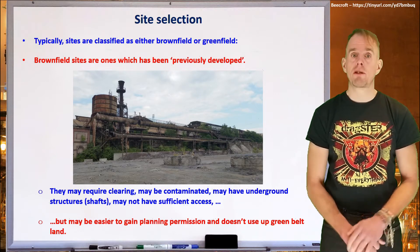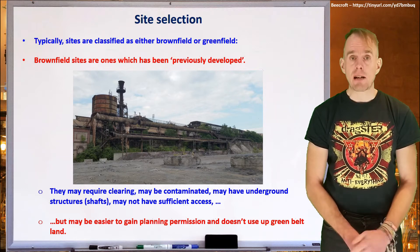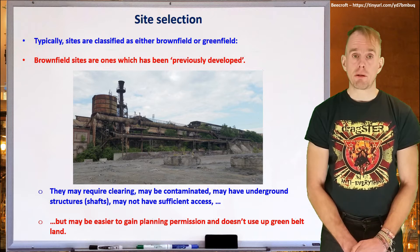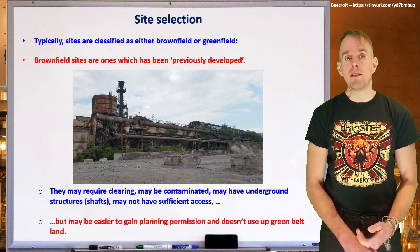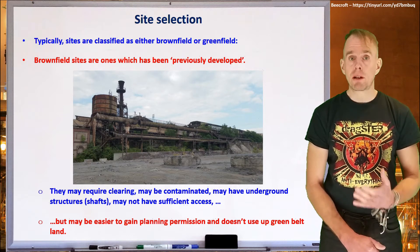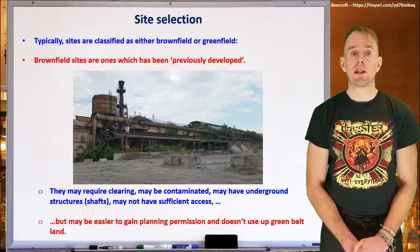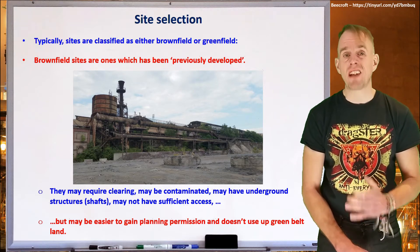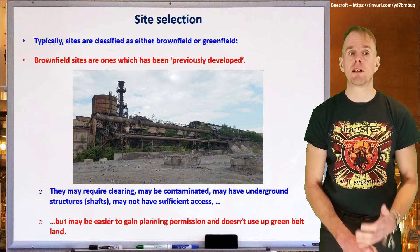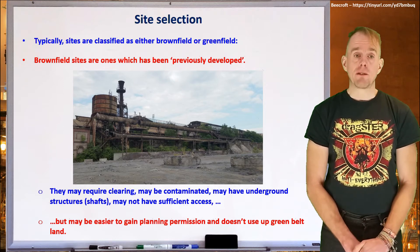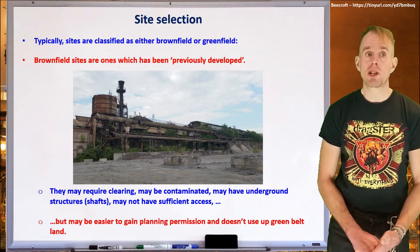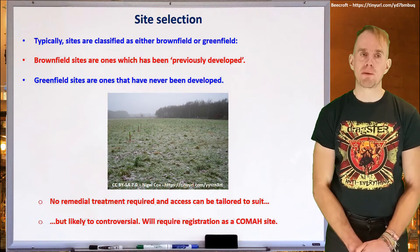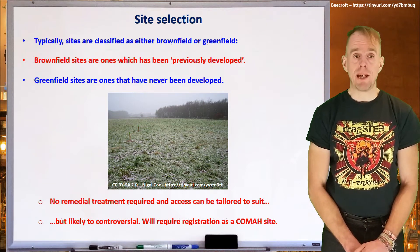All of these old sites will require levelling, clearing, decontaminating, and making safe, which is a huge set of civil and structural engineering works. But it's very often easier to gain planning permission, and because industrial decline has left significant unemployment and deprived areas, there's often sufficient incentive for new build plant to go into these areas. Also, it doesn't use up greenbelt land. A greenfield site, by contrast, is countryside — no remedial treatments needed and access can be tailored to suit.